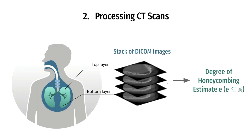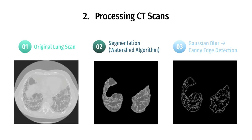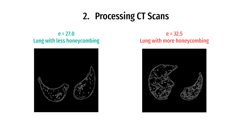To solve problem two, our aim is to use computer vision methods to transform the DICOM stack of each patient into a real number representing degree of honeycombing. First, we will segment these images to obtain only the lung region. Then, we will perform edge detection on these lung segments to isolate the honeycombing texture. Finally, the estimate is calculated by averaging the pixel intensities in the lung region of edge images. The higher the degree of honeycombing, the more edges we detect, which corresponds to a bigger numerical value.